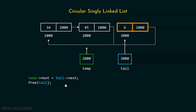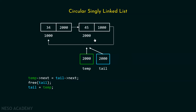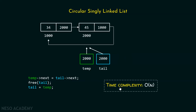After this, we can free our node — that is, we can delete this node using the free function. And finally, we must update our tail pointer so that it points to the new last node. The time complexity of all these operations will be O(n), because it depends on the length of the list and traversal is involved.